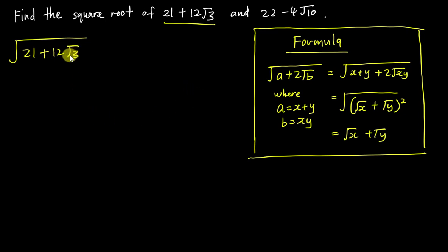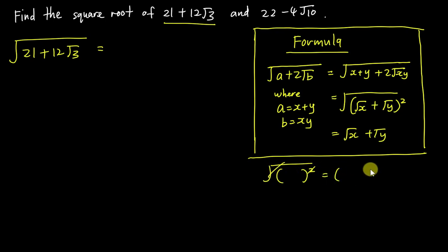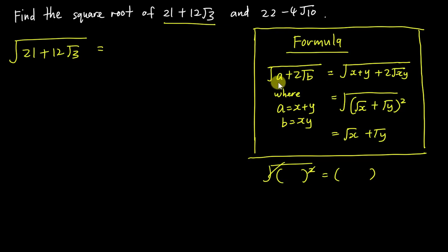Before going further, as I said in the last video, our objective is to get something like a perfect square inside the square root so I can cancel it out. My objective is to get a bracket squared. In order to use this formula, you must change the term inside the square root into the pattern a plus 2√b, where a = x + y and b = x × y.